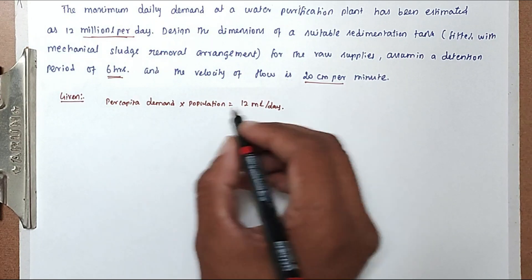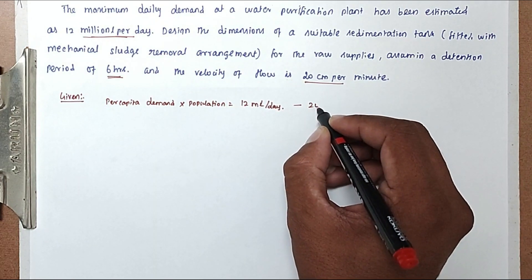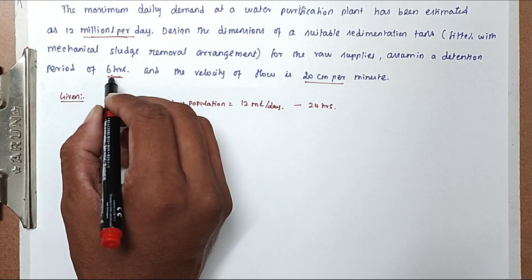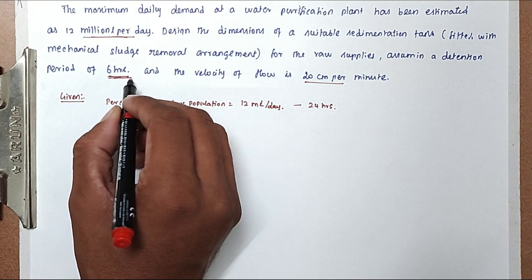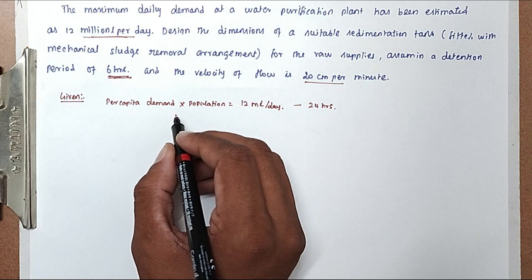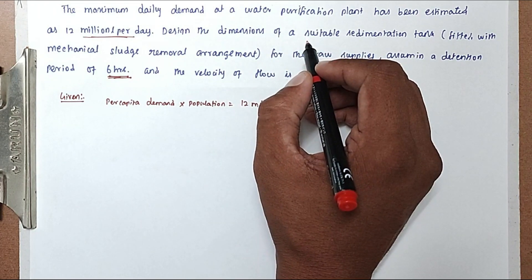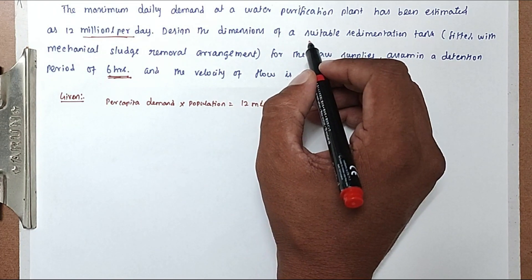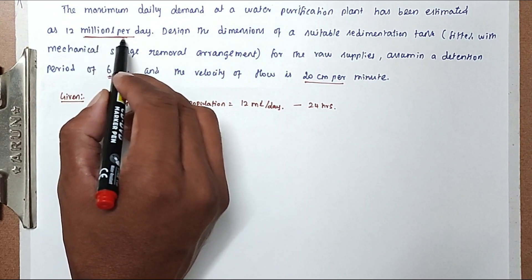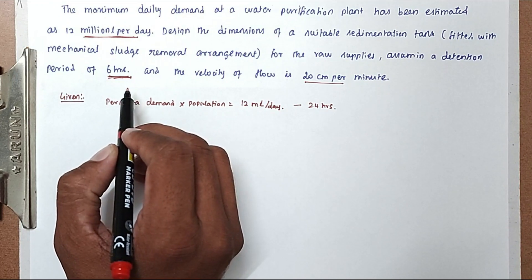This will be treated in 24 hours, but the detention period is only 6 hours. We have to find out the dimension of the sedimentation tank and volume of the sedimentation tank. The water is retained in the sedimentation tank for only 6 hours per day.